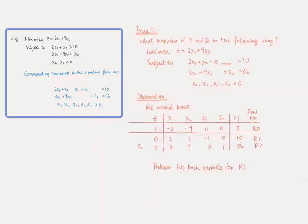Let's imagine we omit the artificial variable. We would have a system which corresponds to the following table. We would assign s2 to be the basic variable because it only occurs in one constraint equation and its coefficient is 1. However, there is no basic variable in the first constraint. We cannot multiply row 1 by negative 1 to make the coefficient equal to positive 1, because this would make the right-hand side equal to negative 10, which is not allowed.